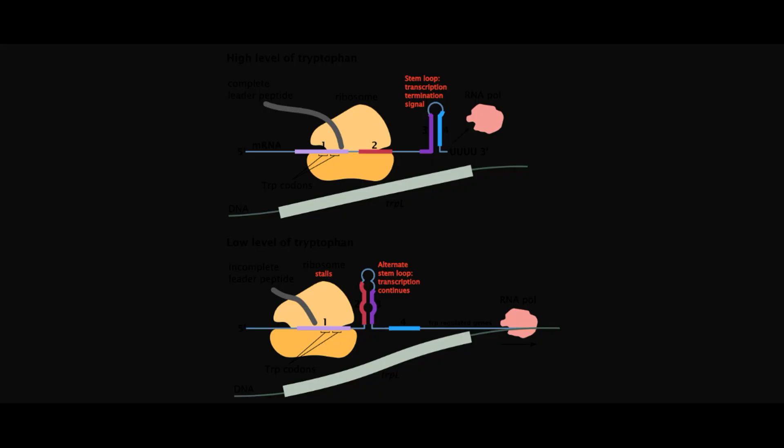Recall that in prokaryotes, transcription is often terminated by an mRNA stem loop. The TRP mRNA includes four sequences that are able to form a stem loop with an adjacent sequence, so there are three possible stem loops: one with two, two with three, and three with four. The three-to-four stem loop contains a transcription termination sequence. Depending on the abundance of tryptophan, this three-to-four stem loop is formed. But why?